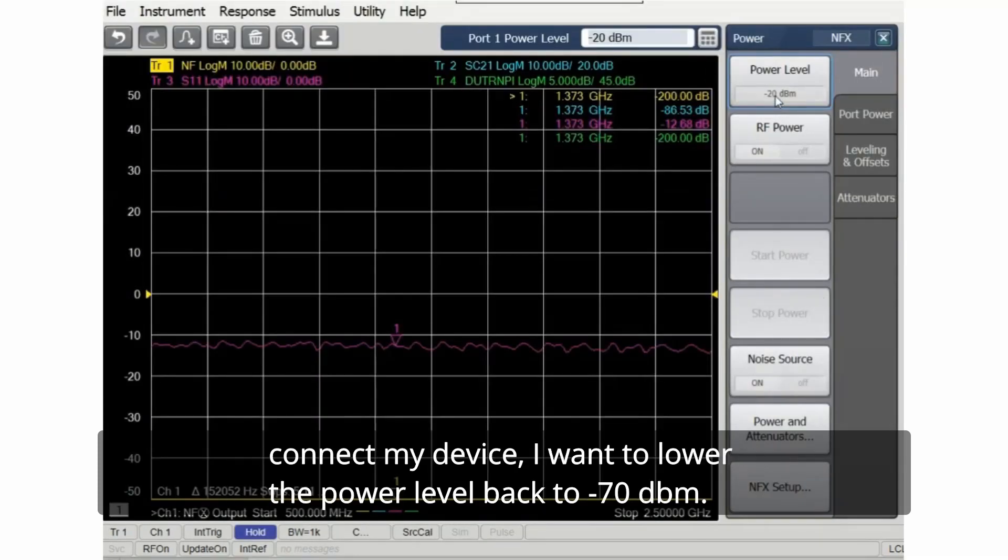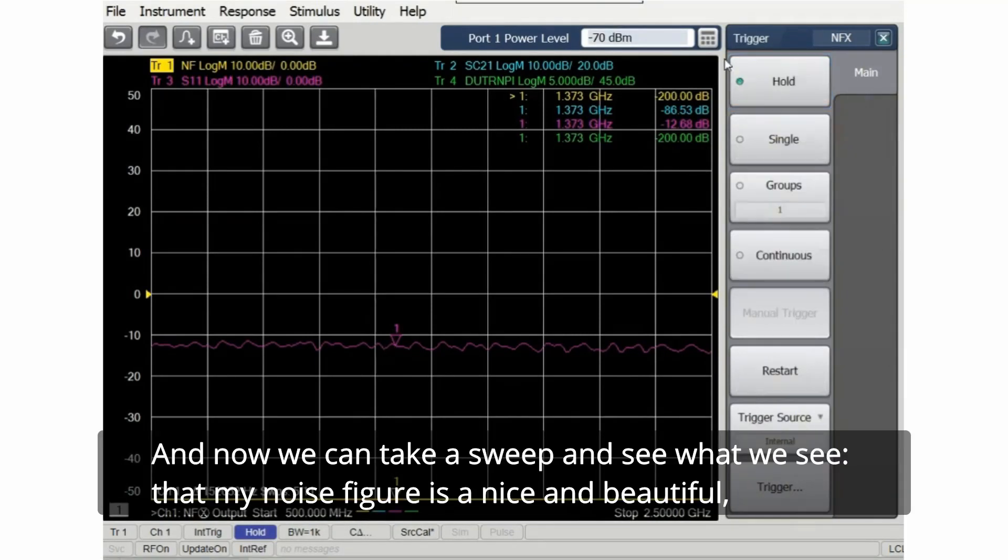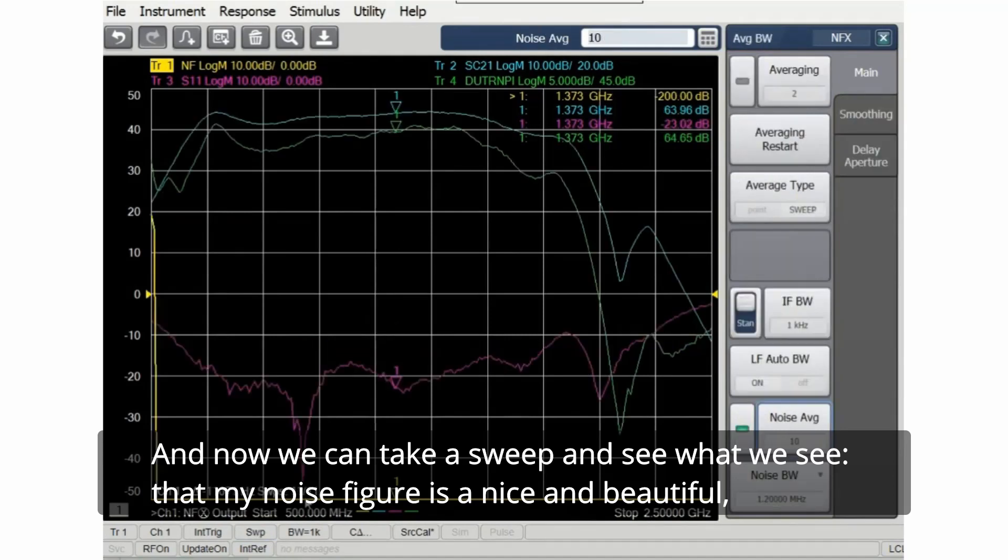And at the end we save the cal set away, and this is the tricky part. Before we connect my device, I want to lower the power level back to minus 70 dBm. And now we can take a sweep and see what we see.